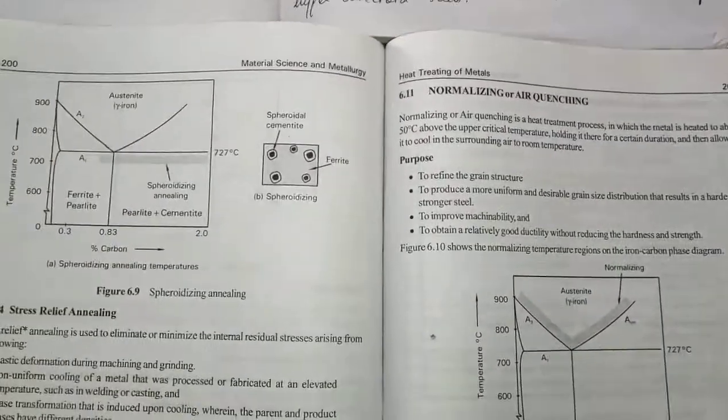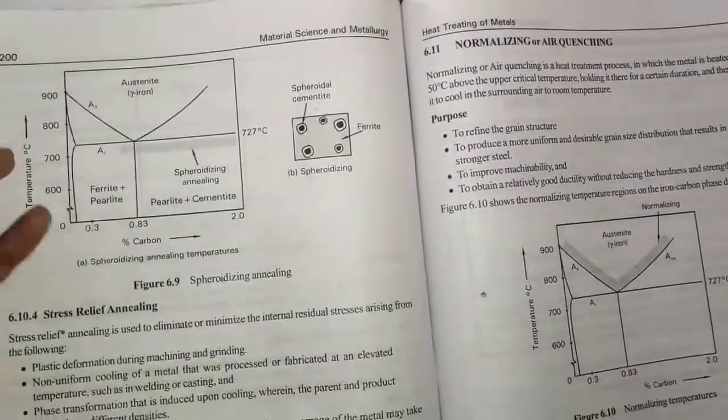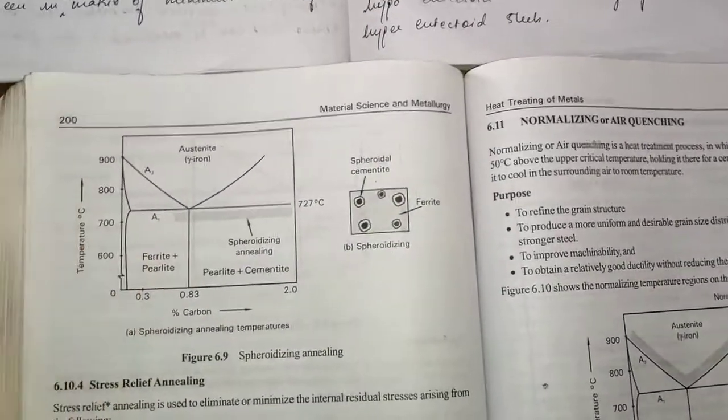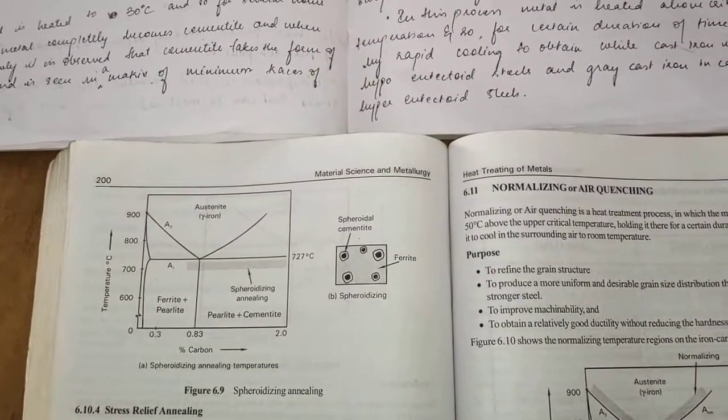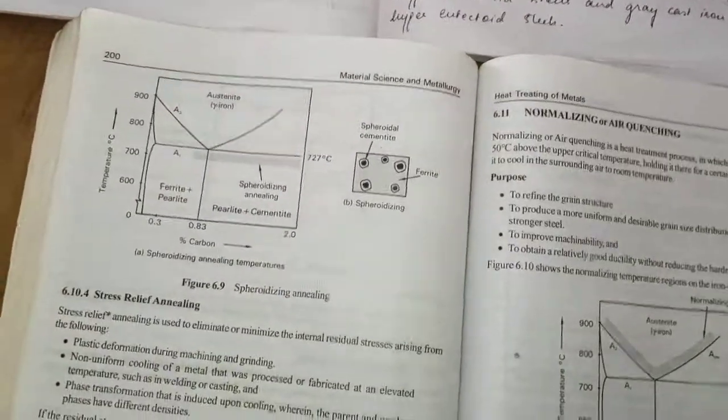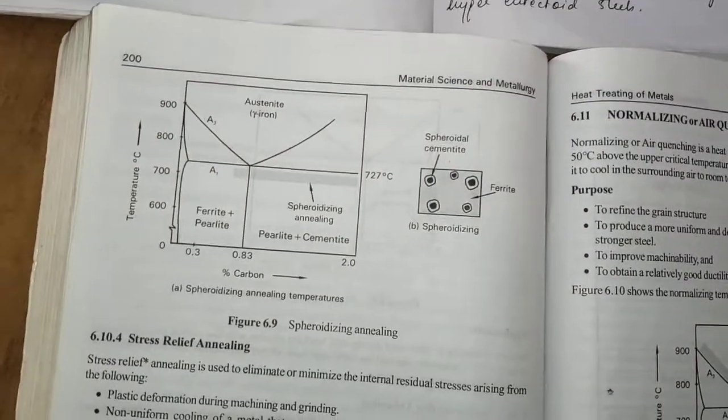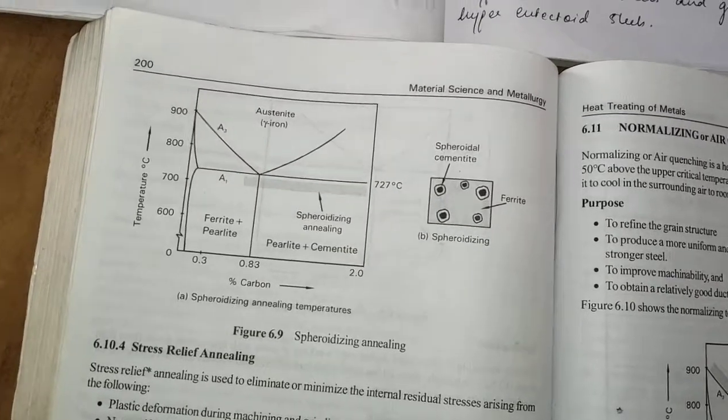The most important thing you should know is spheroidizing is not an independent heat treatment process. It is always the continuation of process annealing heat treatment process. The advantages and applications are in the textbook, so please refer to the textbook I have passed in the slides. In the next slide I'll be discussing stress relief annealing.